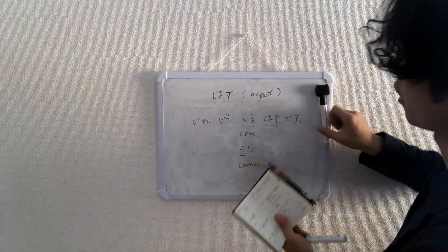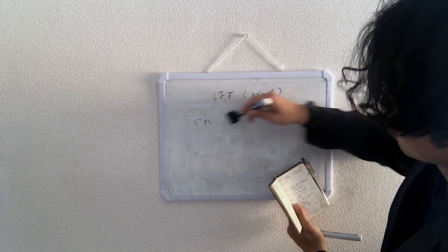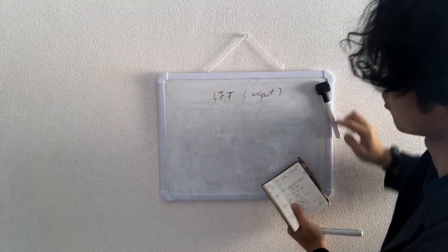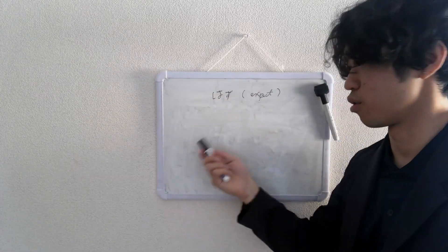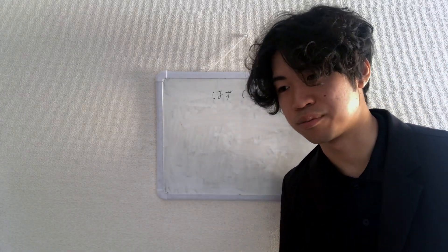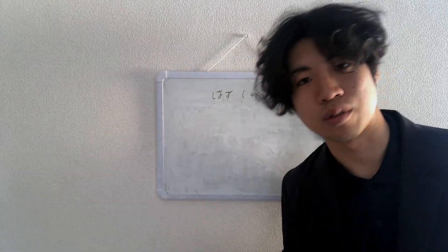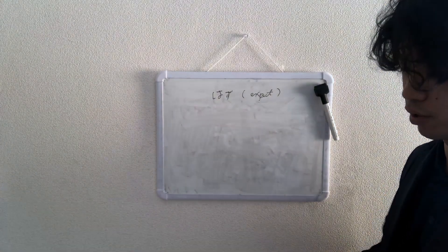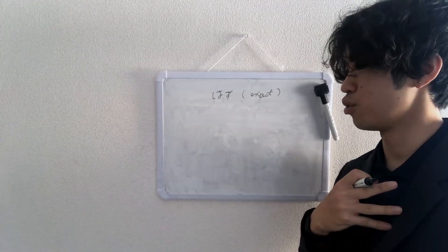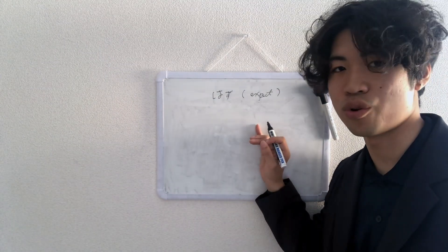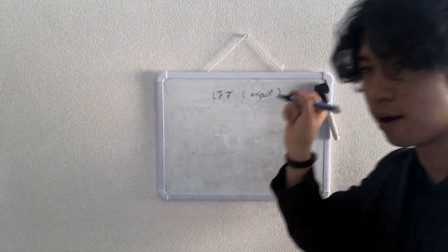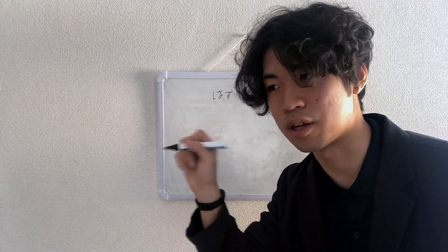So that's verb and the い-adjective. Now let's look at な-adjective and nouns. Oh I forgot to mention, but you can use the past tense for your い-adjectives of course, so 今日は暑かったはずです, today ought to have been hot. Now let's look at な-adjectives first.